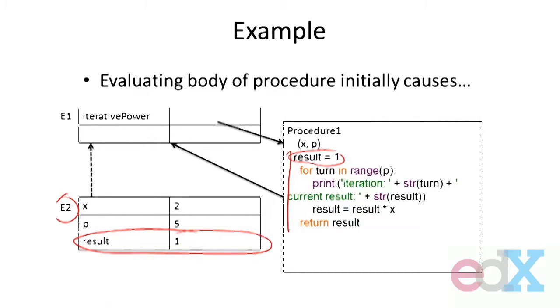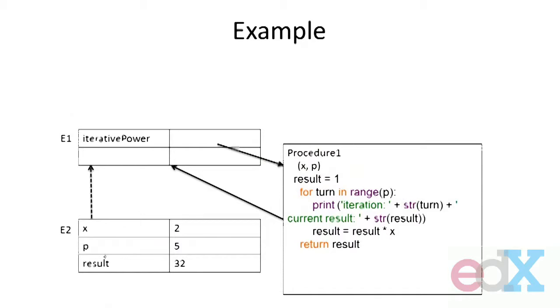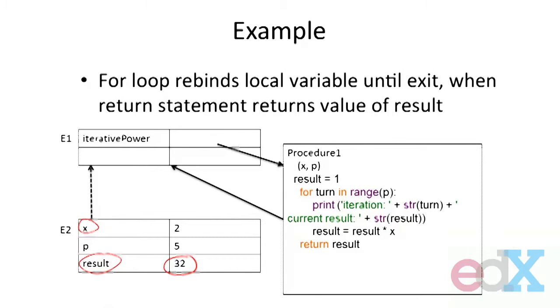Having done that definition, I run through the for loop. That says look up the value of x, which is right there, look up the value of result, multiply them together, and change the binding for result. Then do it again and again. All of this computation takes place in environment e2. The loop rebinds that local variable until we get to the exit. When we hit that return expression, it looks up the value of result in this environment - that's what's actually returned.